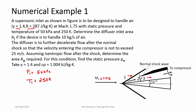There is also a possibility of a normal shock occurring here — so two shocks — and then a variable area duct diffuser further. The device is to handle 10 kg/s of air. The diffuser is to further decelerate flow after the normal shock so that the velocity entering the compressor does not exceed 25 m/s. At the exit, velocity is given as 25 m/s — quite small compared to the incoming velocity. Static pressure P1 = 50 kPa and T1 = 250 K. Assuming isentropic flow after the shock, determine the required area and find the static pressure at the exit Pe.